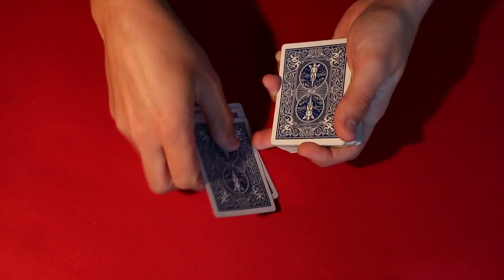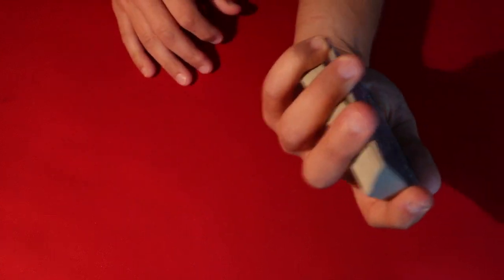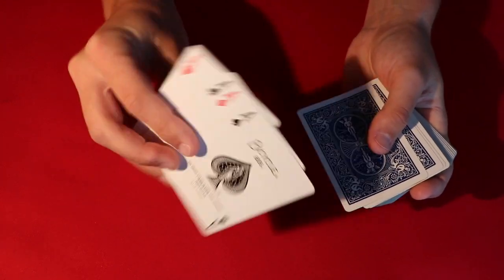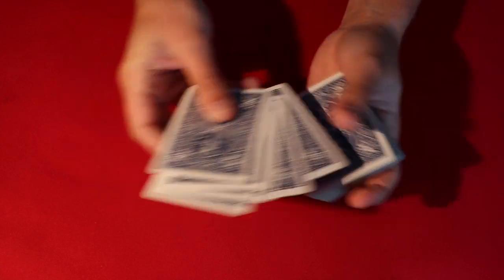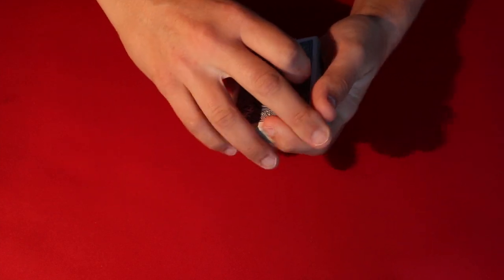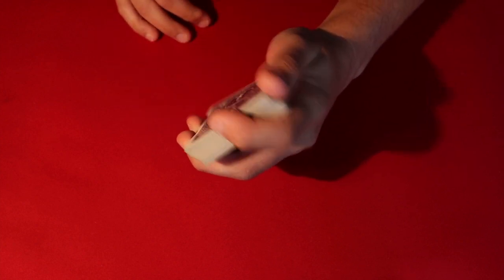In this pinky break, set the aces on top and now you have four aces and you have three cards, three random cards, all inside of a pinky break that from the front shouldn't look like anything.